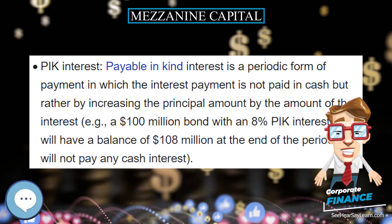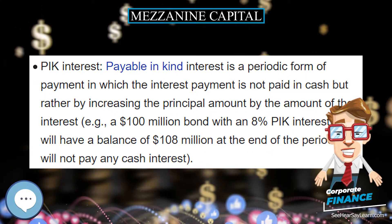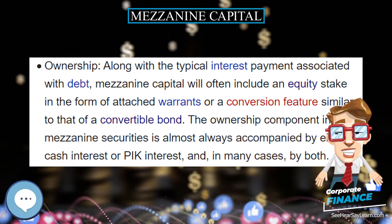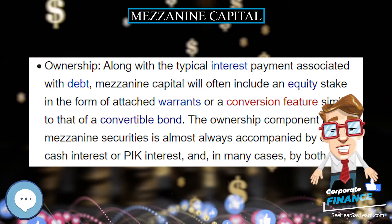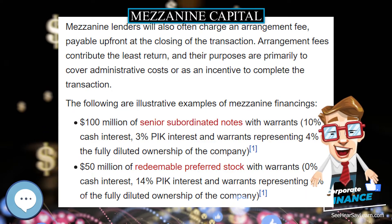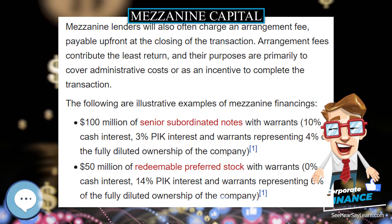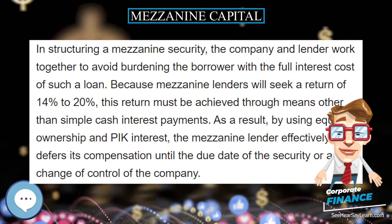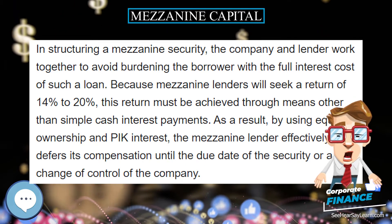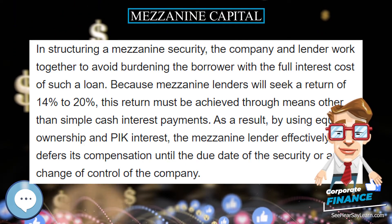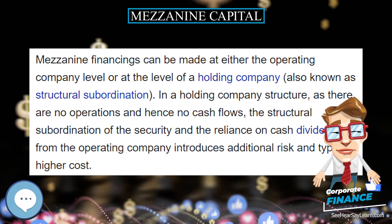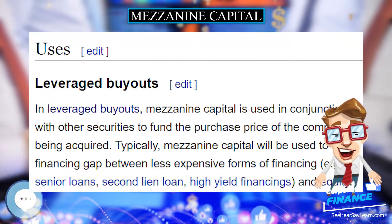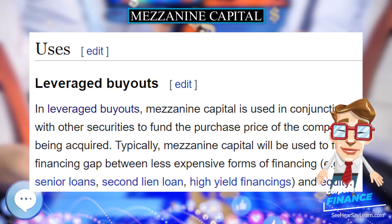Mezzanine capital is often a more expensive financing source for a company than secured debt or senior debt. The higher cost of capital associated with mezzanine financings is the result of its being an unsecured, subordinated, or junior, obligation in a company's capital structure — i.e., in the event of default, the mezzanine financing is only repaid after all senior obligations have been satisfied.